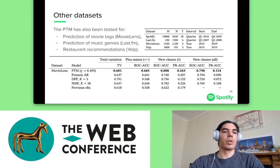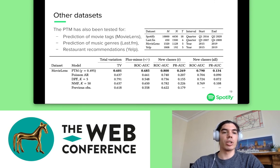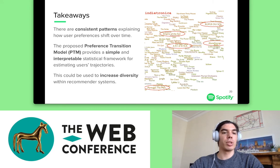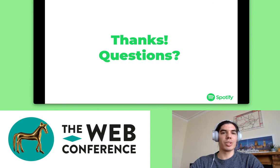We also generalized this work to other datasets and tested PTM on other applications, for example prediction of movies and restaurants. Again, the PTM achieves the best performance across different tasks, showing the model is generalizable to other domains. To conclude, I tried to show that there are consistent patterns in how users' preferences shift over time, and we proposed the preference transition model PTM — a simple and interpretable statistical framework for estimating user trajectories. This could be used to increase diversity within recommendation systems, which is a desirable property for modern music streaming services. Thank you very much, and I look forward to your questions at the Q&A session.